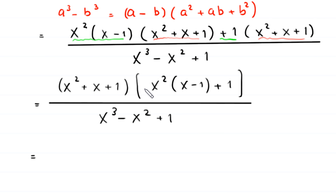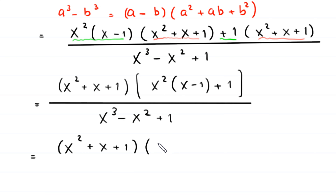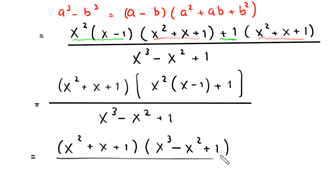Next, further simplifying: x squared plus x plus 1 times — distributing x squared — gives x cubed minus x squared plus 1, divided by the denominator x cubed minus x squared plus 1.